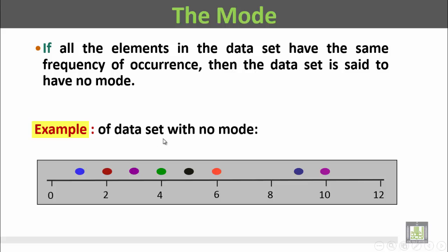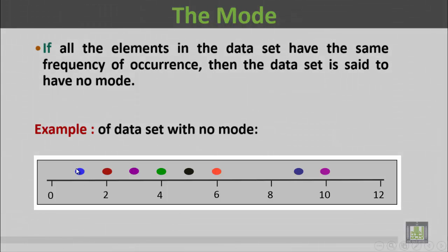For example, a data set with no mode. Here we have one with only one frequency, two has one frequency, three, four, five, six, nine, ten. All of them have only a frequency of one. So there is no value with more frequency than the others.